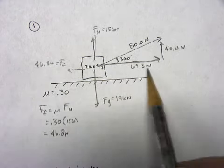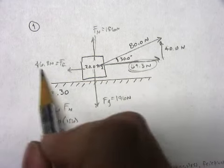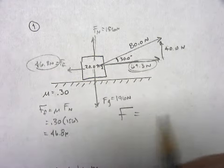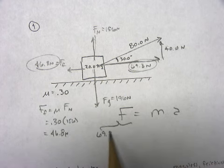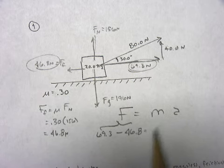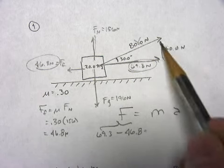Okay, so I'm being pulled forward at this and backwards at that, so I can finally find my acceleration. Because I'm being pulled forward at 69.3 and I'm being pulled backwards at 46.8. Now, I don't use this because I put that in there.